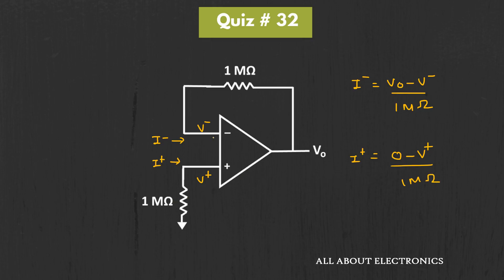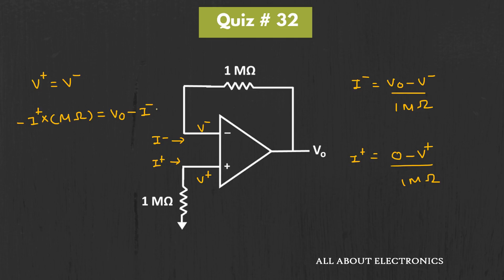As we are considering this op-amp as an ideal op-amp, we can say that V+ will be equal to V-. That means the voltage at these two nodes will be equal. If we simplify these two expressions, then we can say that minus of I+ times this 1 megaohm resistor will be equal to Vout minus I- times this 1 megaohm resistor. So from this, the output voltage Vout will be equal to (I- minus I+) times this 1 megaohm resistor.